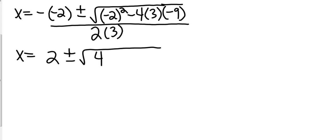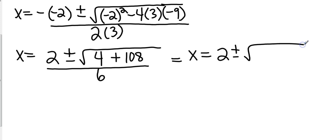Let me say that again. Negative 4 times 3 is negative 12. Negative 12 times negative 9 is positive 108, all over 6. So I'm going to take a step to the right here. That's going to be 2 plus or minus square root. 4 plus 108 is going to be 112, all over 6.